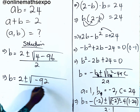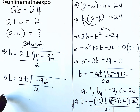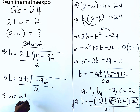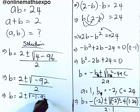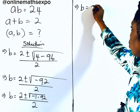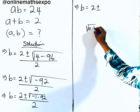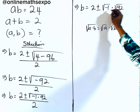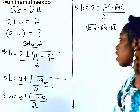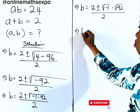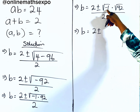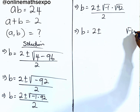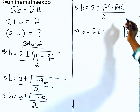We have b = (2 ± √(−92)) / 2. We can write √(−92) as √(−1 × 92). Using the rule √(a × b) = √a × √b, this becomes √(−1) × √92. And remember, √(−1) = i, the imaginary unit. So we now have b = (2 ± i√92) / 2.